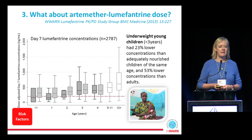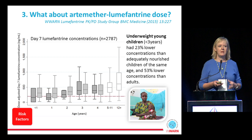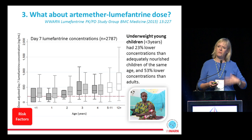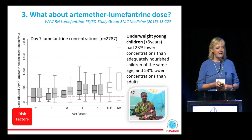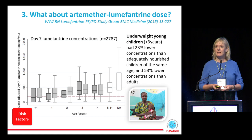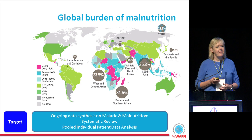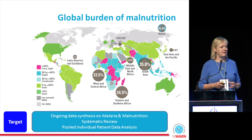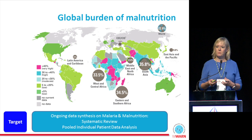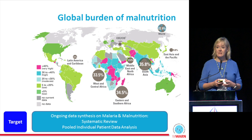Artemether-lumefantrine is probably our most widely used antimalarial drug. A similar study group analyzed data from almost 3,000 patients to identify who might not be getting the right dose — since underdosing could foster resistance and shorten the useful therapeutic life of the drug. We found that very young children under three years, particularly if malnourished, were the most vulnerable group. This is a real concern since in malaria endemic areas almost one third of children are malnourished. We've now targeted interventions: doing a systematic review to understand interactions between malaria and malnutrition, and conducting individual patient data analysis to understand the problems and how to solve them.